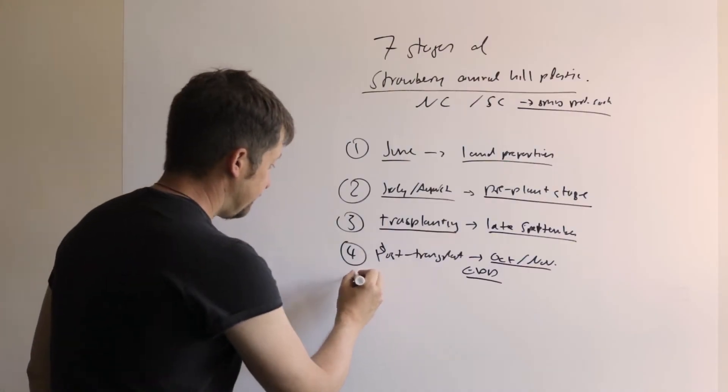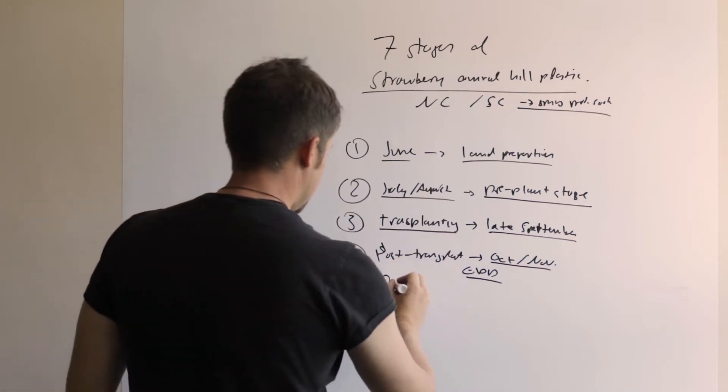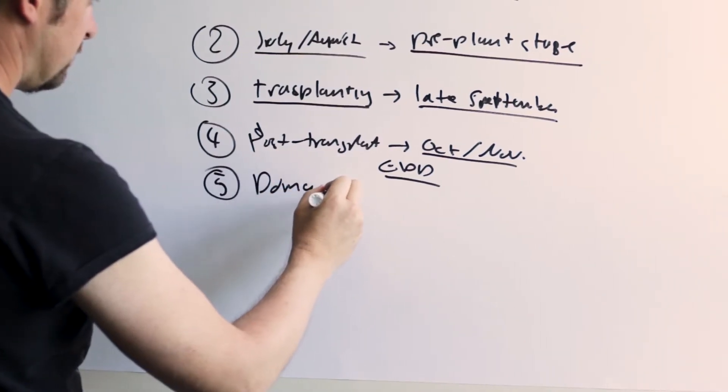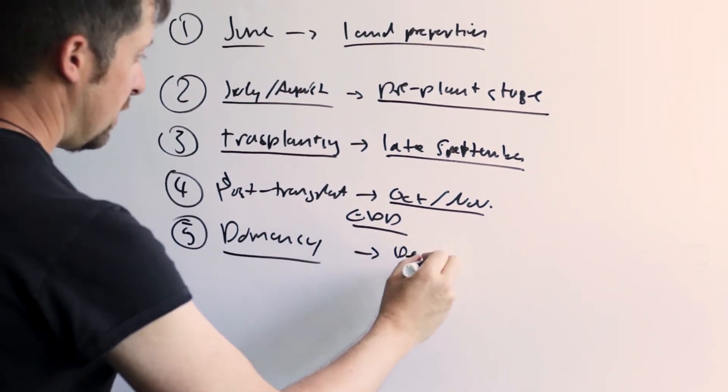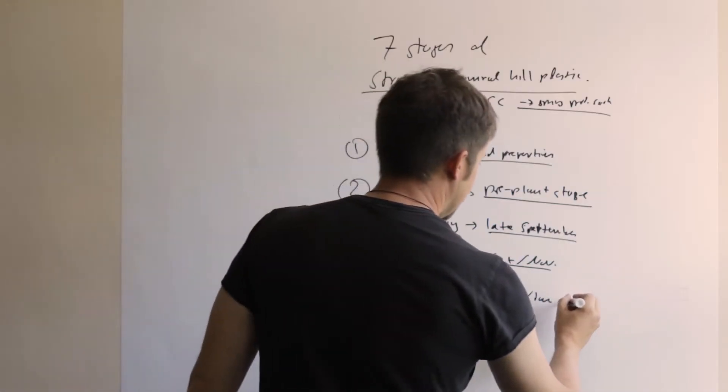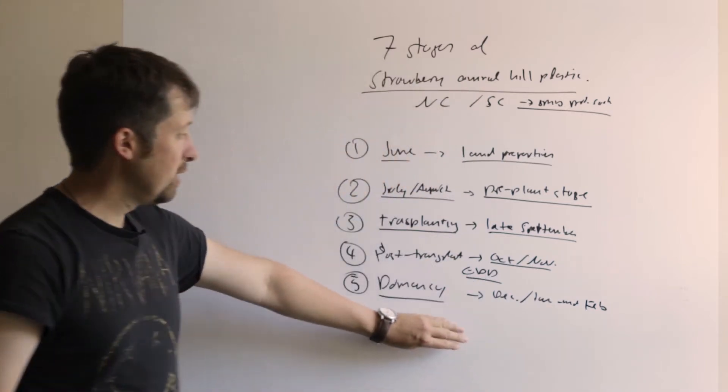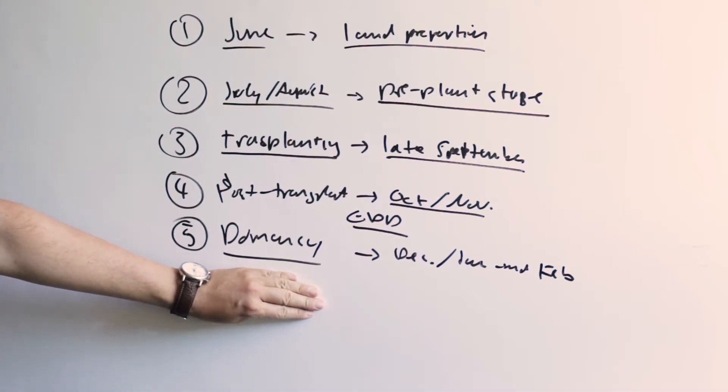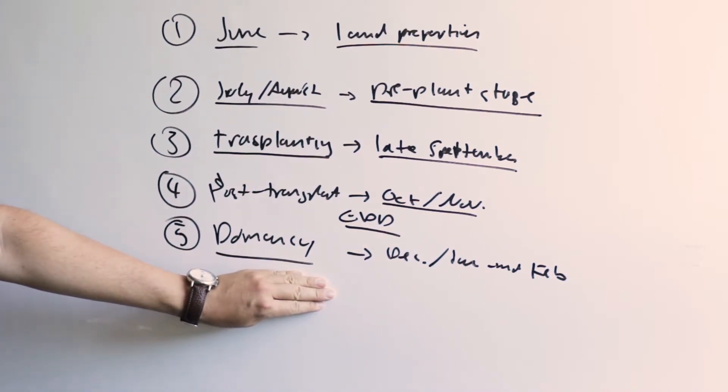The fifth stage would be the dormancy stage. That is in winter and it is usually in December, January, sometimes all the way to mid-February. That can be a very tricky stage since it depends a little bit on the variety. With early varieties, if you get a warm winter, they often show flowers very early on.